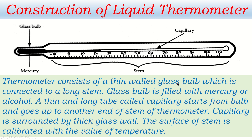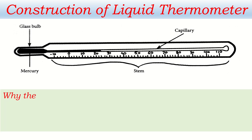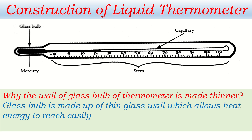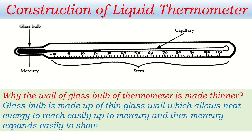There are some important questions related to the construction of the thermometer. First question: why is the wall of the glass bulb made thinner? The wall of the glass bulb is made thinner to allow heat energy to enter the glass bulb and reach the mercury easily. The glass bulb is made of thin glass, which allows heat energy to reach the mercury easily, and then mercury expands to show the temperature.